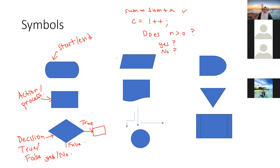The parallelogram shape — slightly slanted on four sides — is for input and output. An example of input: 'please enter your PIN number,' like we see at ATMs or when signing in — 'please key in your username, enter your password.' If the username is correct, it goes to the next step. The document symbol is also here, though we rarely use it.